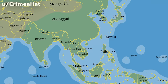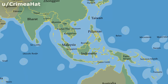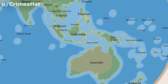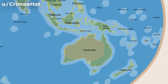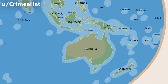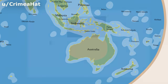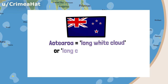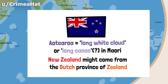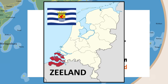In Oceania, there don't seem to be any major differences between endonyms and exonyms in English, with them being the same at times translated to the local language. New Zealand is identified as Aotearoa, which is the native name for New Zealand by the native Māori people. One literal translation seems to be 'Long White Cloud' or 'Long Canoe,' while New Zealand might come from the Dutch province of Zeeland.